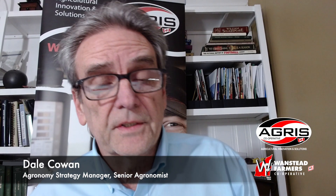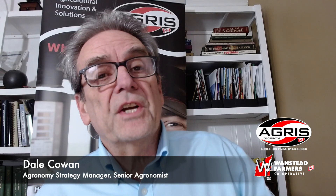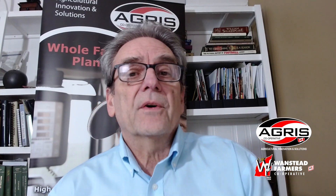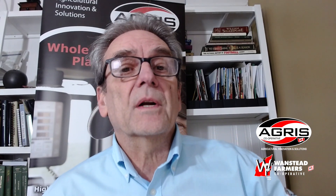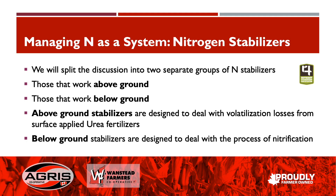We're going to continue our discussion on managing nitrogen as a system and highlight nitrogen stabilizers. We're going to break them into two categories: those that work above ground and those that work below ground. The above ground ones tend to focus on reducing volatilization losses from urea fertilizers, and the below ground tend to work on nitrification.